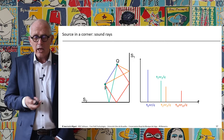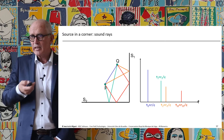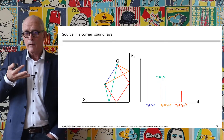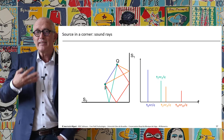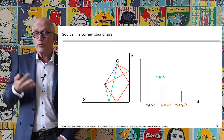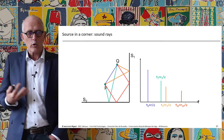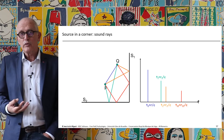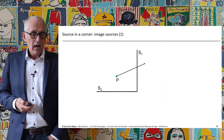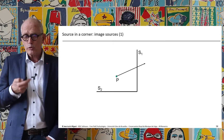On the echogram, we have four different acoustical events arriving at different times. They carry different intensities simply because they have made a longer travel, and the 1/r or 1/r² decay for intensity must be taken into account.